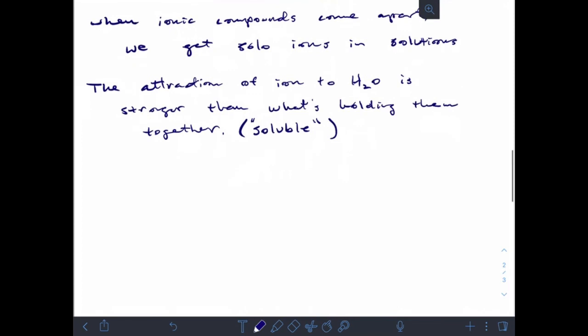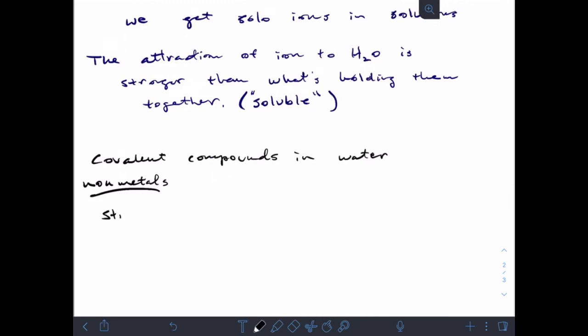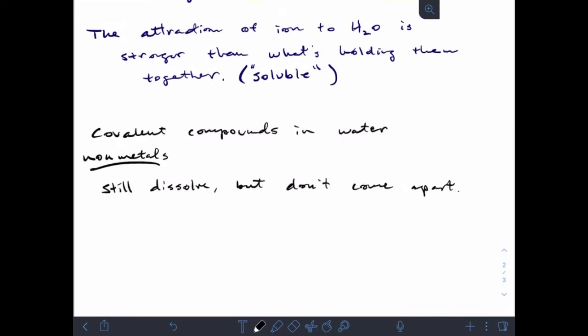Now let's take a look at what happens with covalent compounds in water. Remember, covalent versus ionic: ionic has a metal, covalent is non-metals. So covalent compounds still dissolve but don't come apart. With our ionic compounds, the ionic compound comes apart into its individual pieces. With covalent compounds, the molecule doesn't come apart but water surrounds the whole molecule.